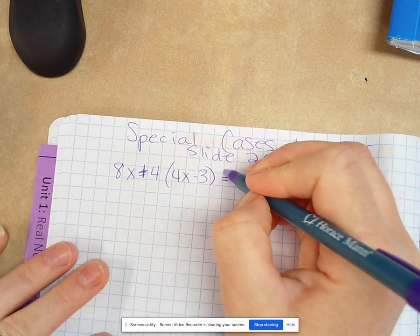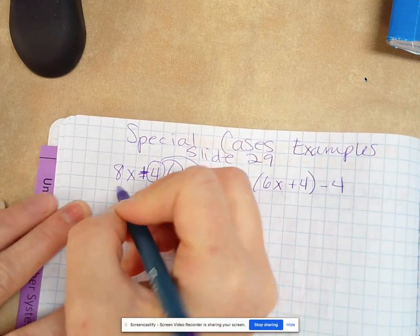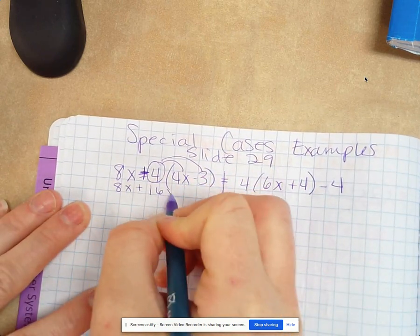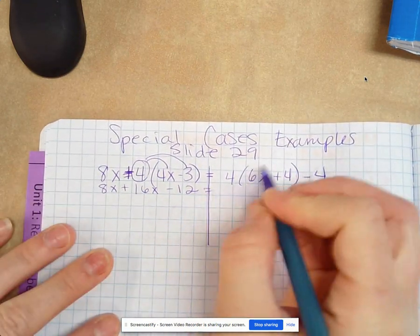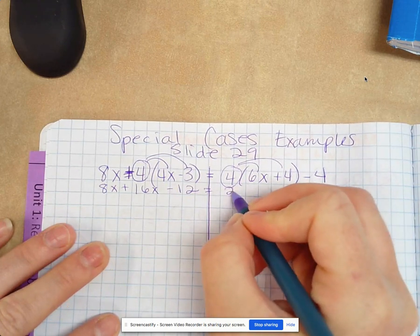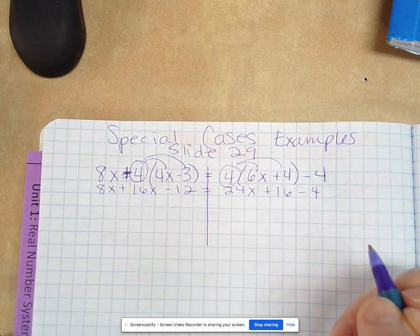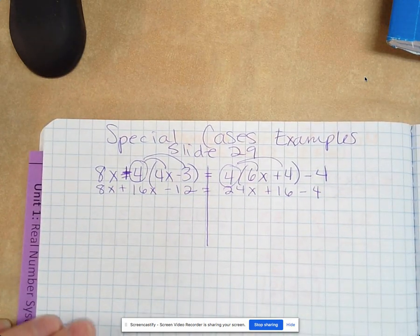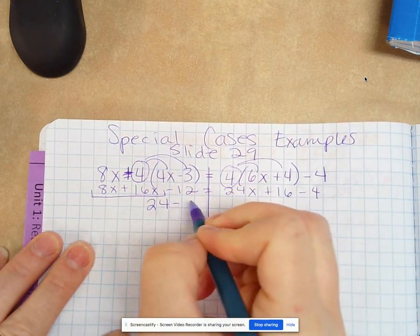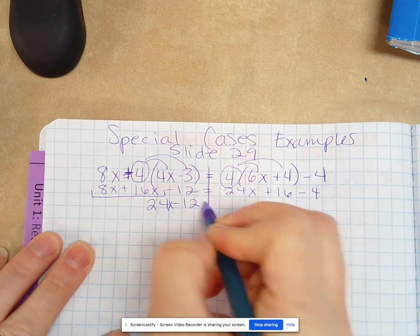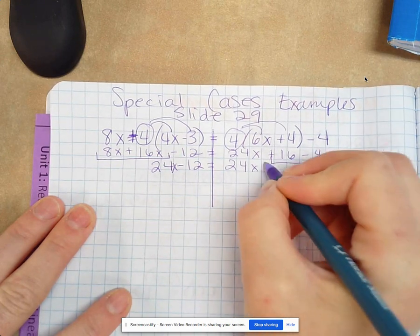Okay, so the first thing you want to do is distribute the 4 over here. So we have 8x plus 16x minus 12 equals, we've got to distribute the 4 over here, 24x plus 16 minus 4. Then we combine the like terms. So 8x and 16x is 24x minus 12 equals 24x, and then 16 minus 4 is plus 12.